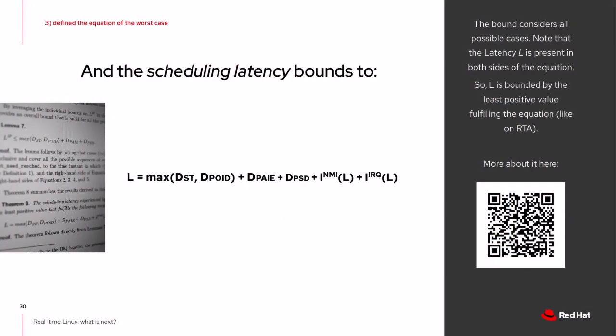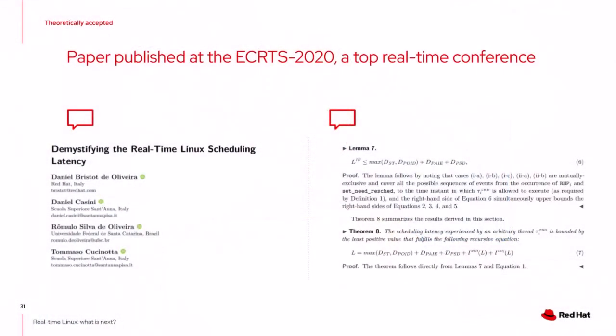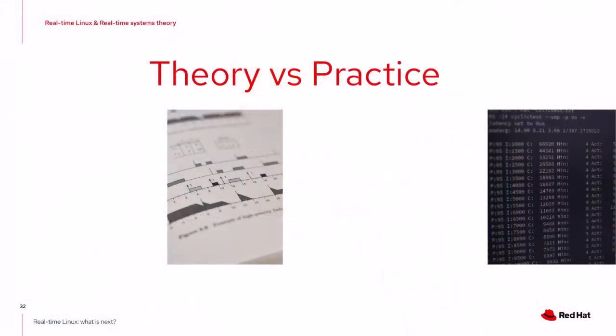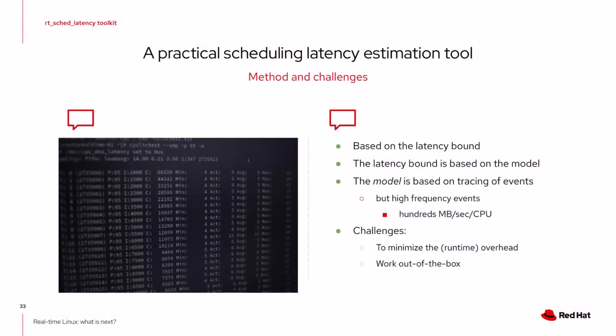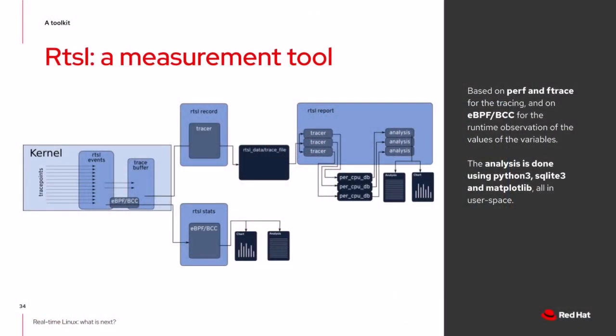With this in mind, we took the formal model and translated its properties and specifications into arguments commonly used in real-time theory. From these arguments we defined the worst blocking a lower-priority thread can cause to the highest-priority thread, and how much interference interrupts can add in this time window. We found a latency bound using these theoretical arguments, good enough to be published. Based on this bound, we also developed a tracing tool called RTSL that shows the value of those variables in practice.